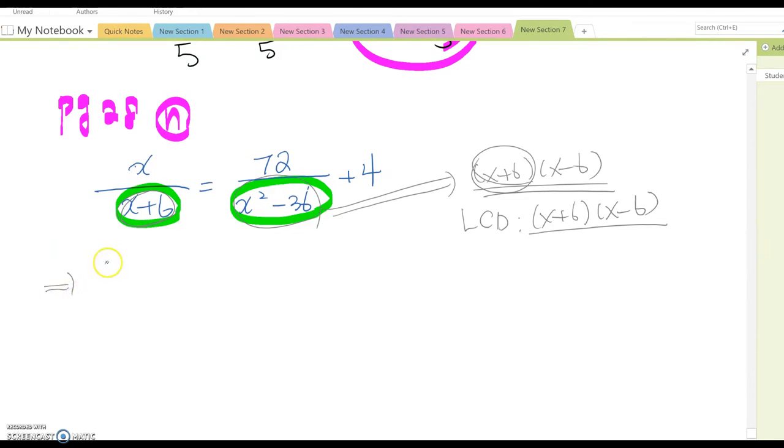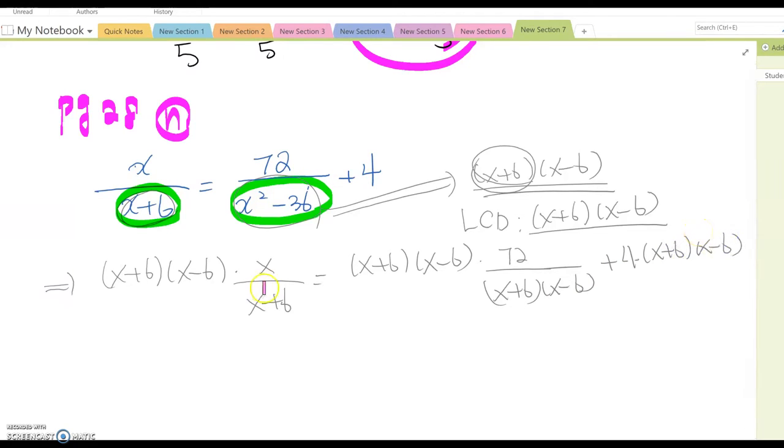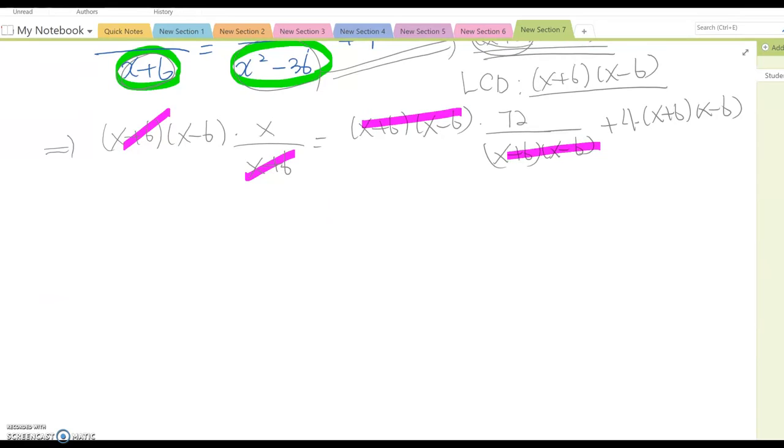You multiply LCD. So x plus 6 times x minus 6 multiplied by x over x plus 6 equal to x plus 6 x minus 6 times 72 over x plus 6 x minus 6 plus 4 times x plus 6 x minus 6. We can simplify this one.